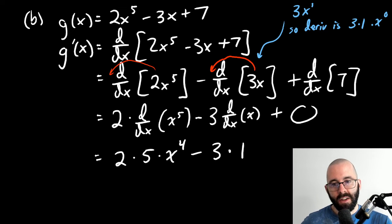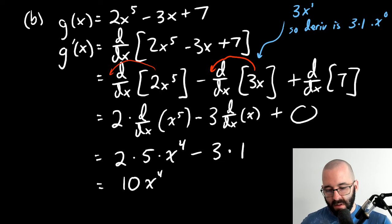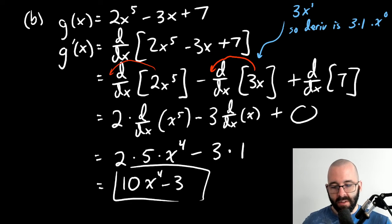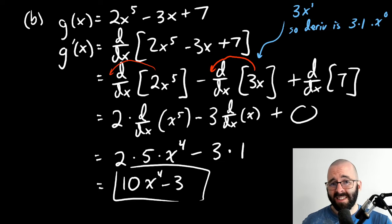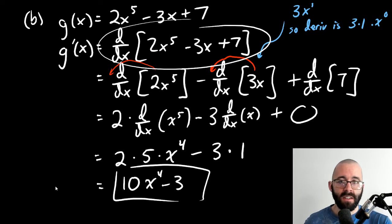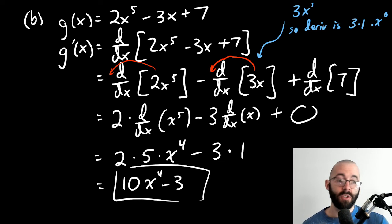Applying the power rule to 2x⁵: bring down the five, subtract one from the exponent so five becomes four, giving 10x⁴. The derivative of 3x is just 3. So our derivative is 10x⁴ minus 3. I'm going through this in a lot of steps showing where each individual piece comes from, but probably even by the end of this section I'll go through much more quickly. At the beginning I want to show every single step.